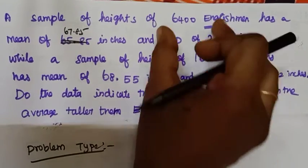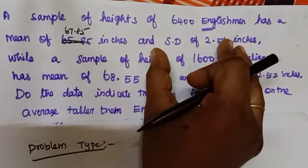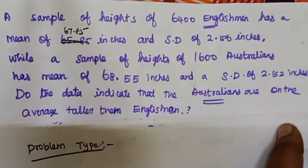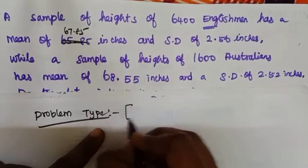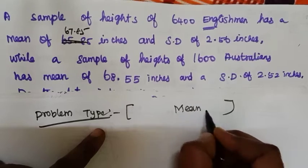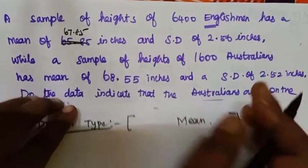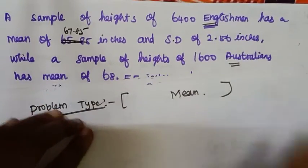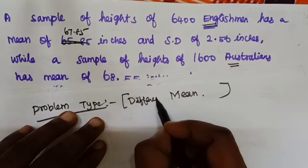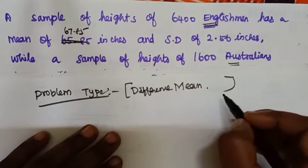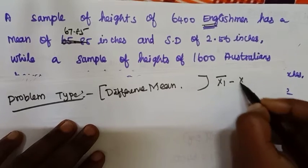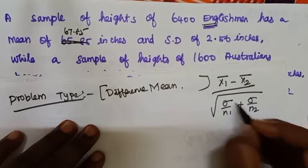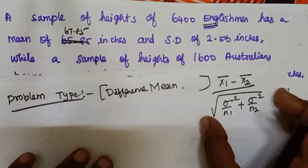We have two separate groups — Englishmen and Australians — so this is a two-sample problem. Since we have two samples from potentially different populations, we use the difference of means formula: Z equals x1-bar minus x2-bar, divided by the square root of sigma1-squared over n1 plus sigma2-squared over n2.